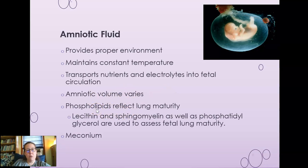You can sample amniotic fluid and measure phospholipids, which reflect lung maturity. Lecithin, sphingomyelin, and phosphatidylglycerol are all used to assess fetal lung maturity. Fetal lungs are not mature until about week 36, so if early delivery is needed, we assess fetal lung maturity and intervene if needed.